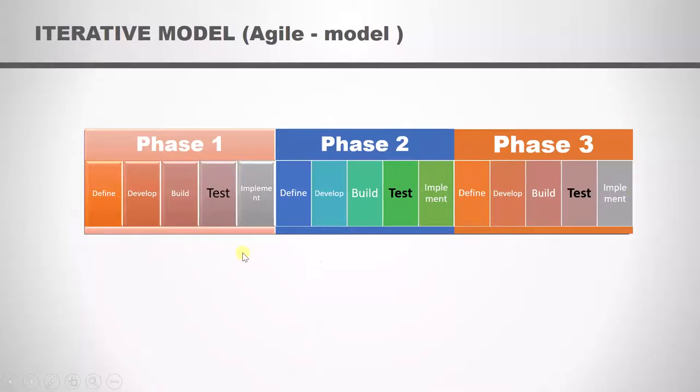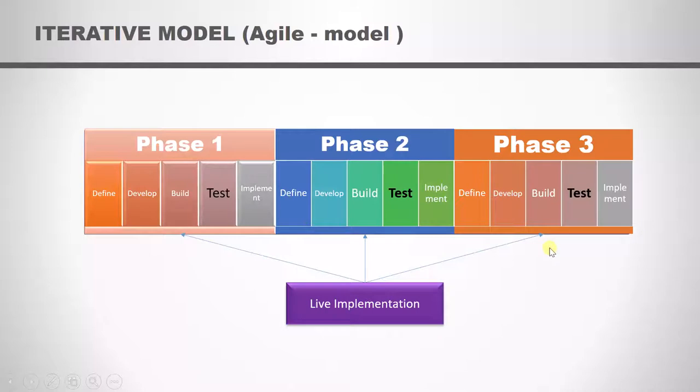This is how the agile method works. Each phase has define, develop, build, test, and implement. We can see that live implementation of the software will happen in all the phases. We are repeating the steps in each one.